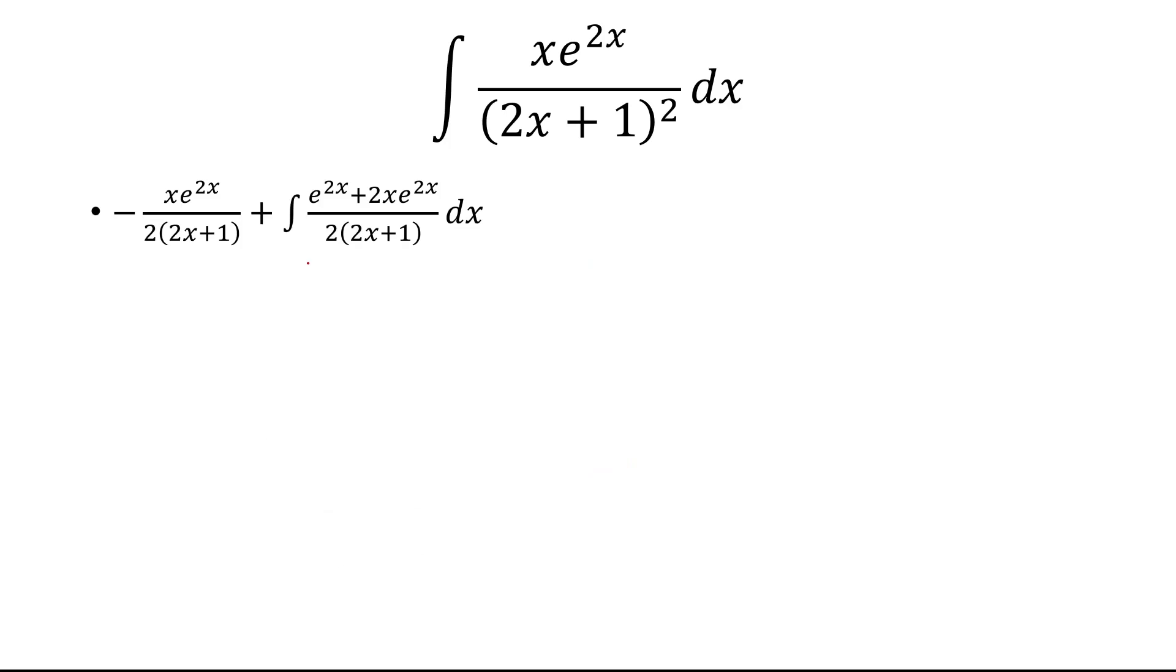Now at this point, I can factor out e to the 2x from the numerator. So that's going to have e to the 2x times 1 plus 2x. And so these two are the same, which are going to cancel. So we have e to the 2x over 2.